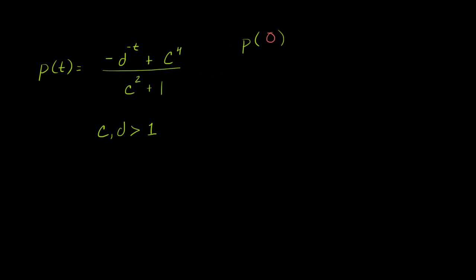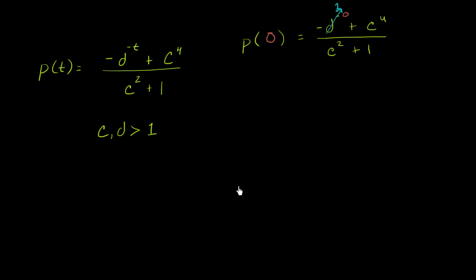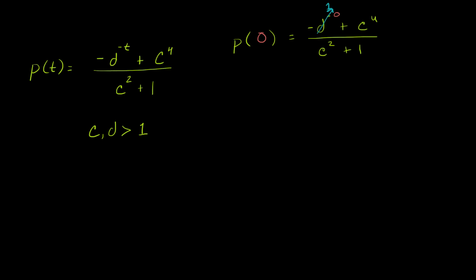p of 0 is going to be equal to negative d to the negative 0 plus c to the fourth over c squared plus 1. Well, d to the negative 0 is the same thing as d to the 0. Since d is non-zero, this is defined — anything non-zero to the 0th power is going to be 1. So the numerator simplifies, and switching the order, we get c to the fourth minus 1 over c squared plus 1.